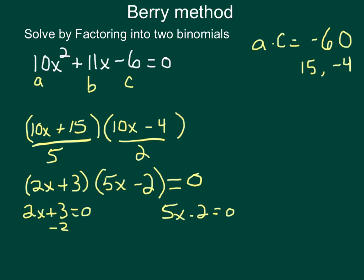I subtract 3 from both sides. 2x equals negative 3, and I'm going to divide by 2. x equals negative 3 halves.